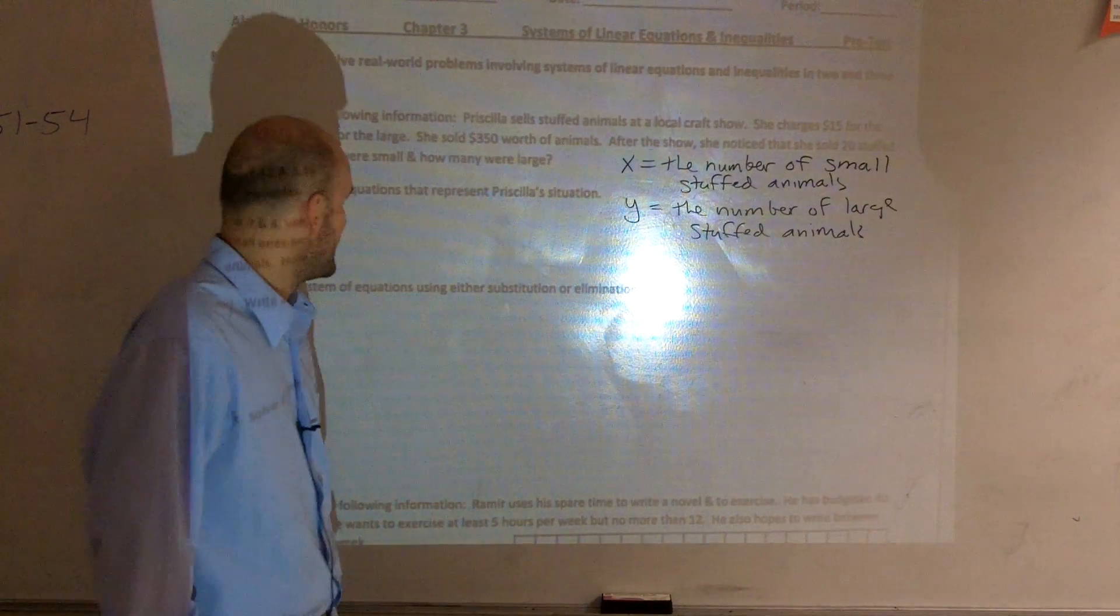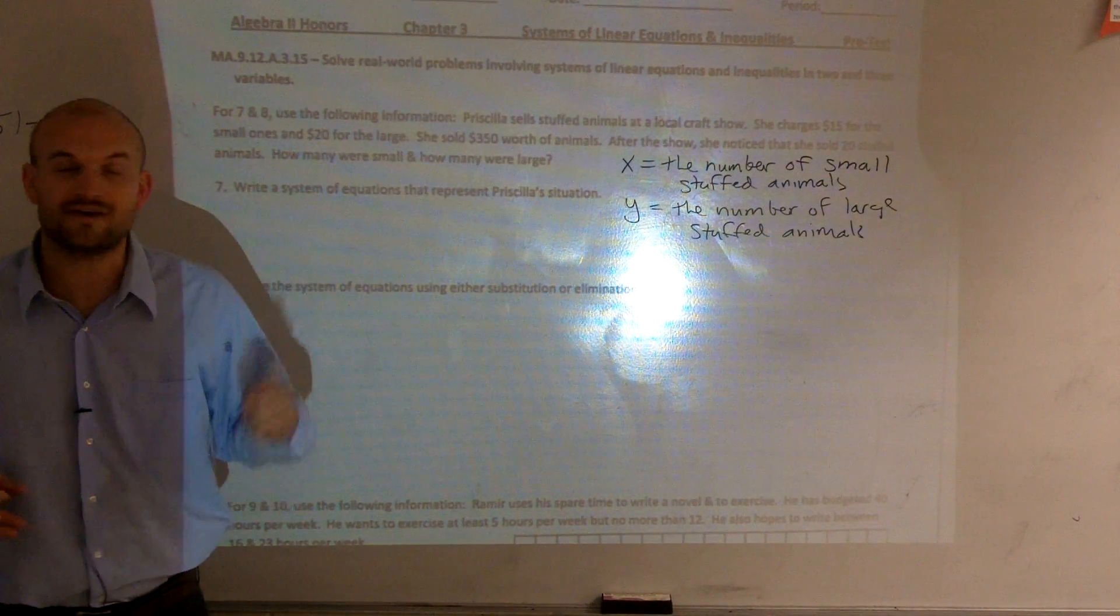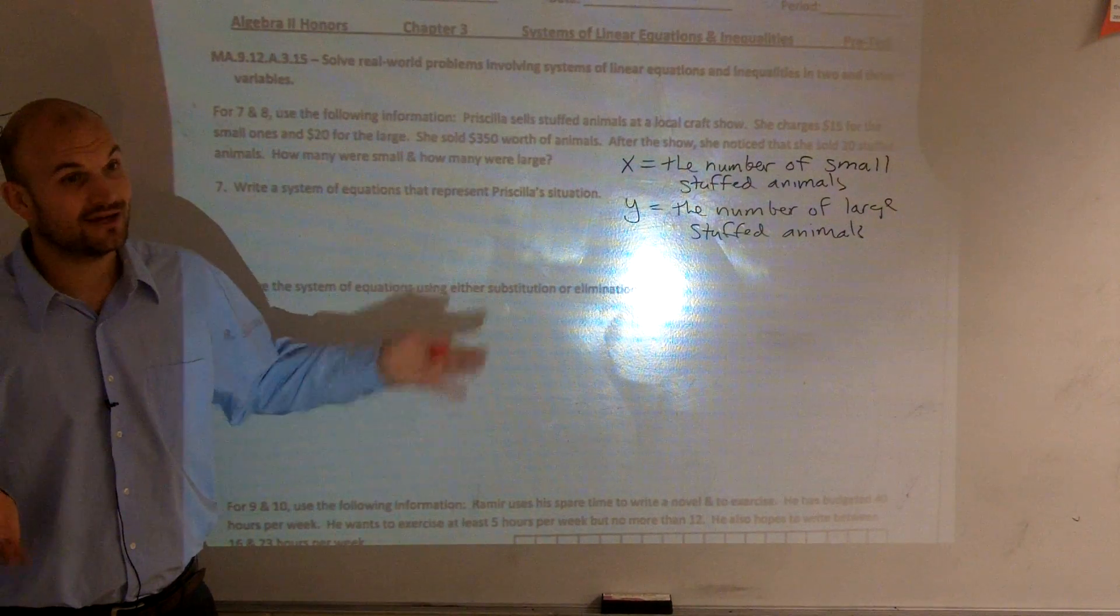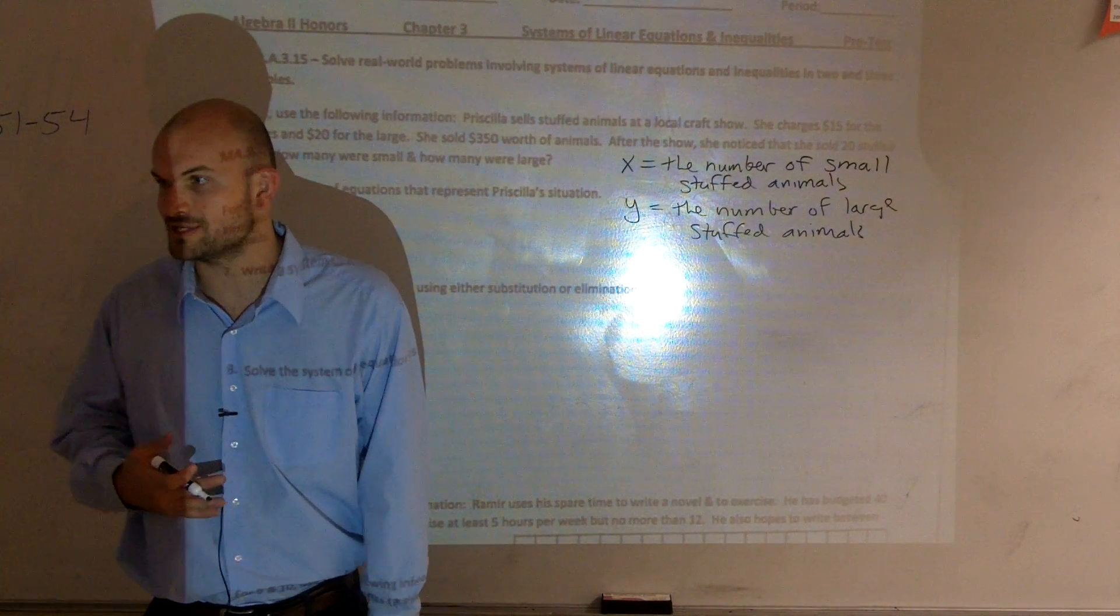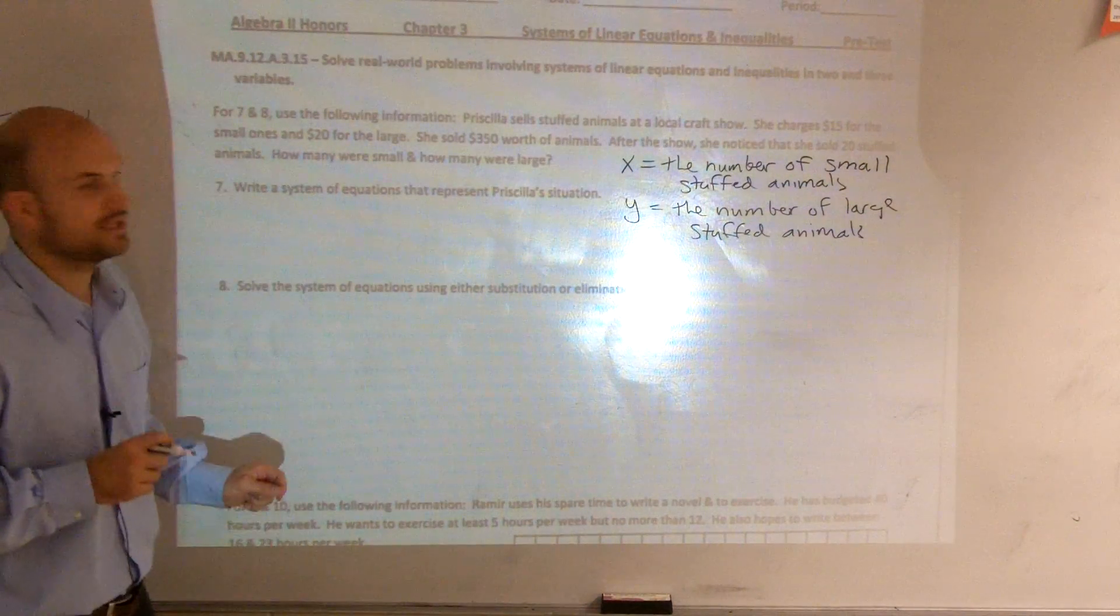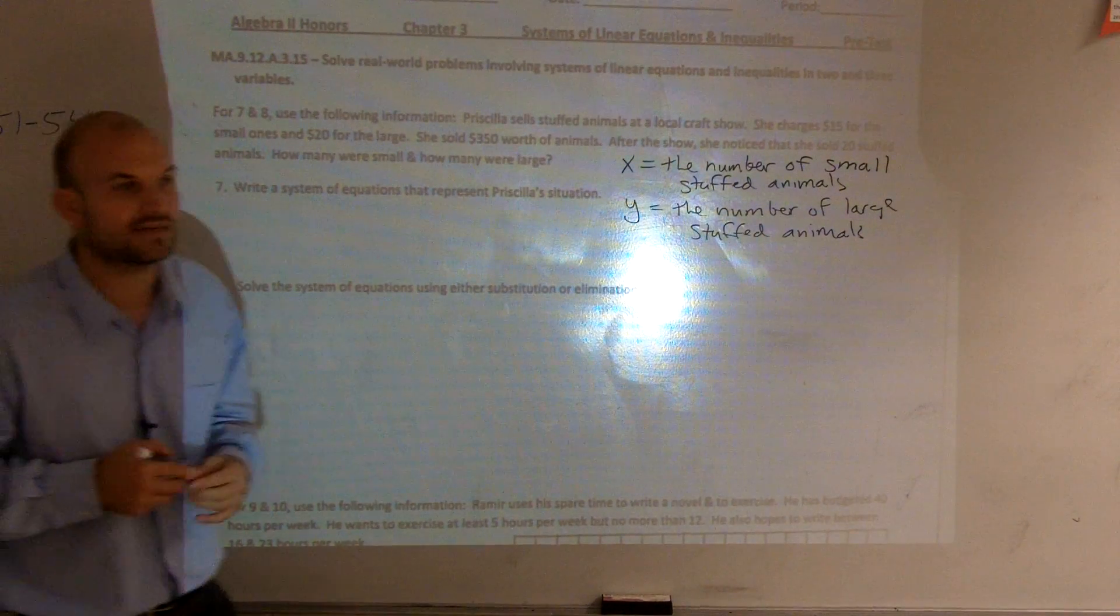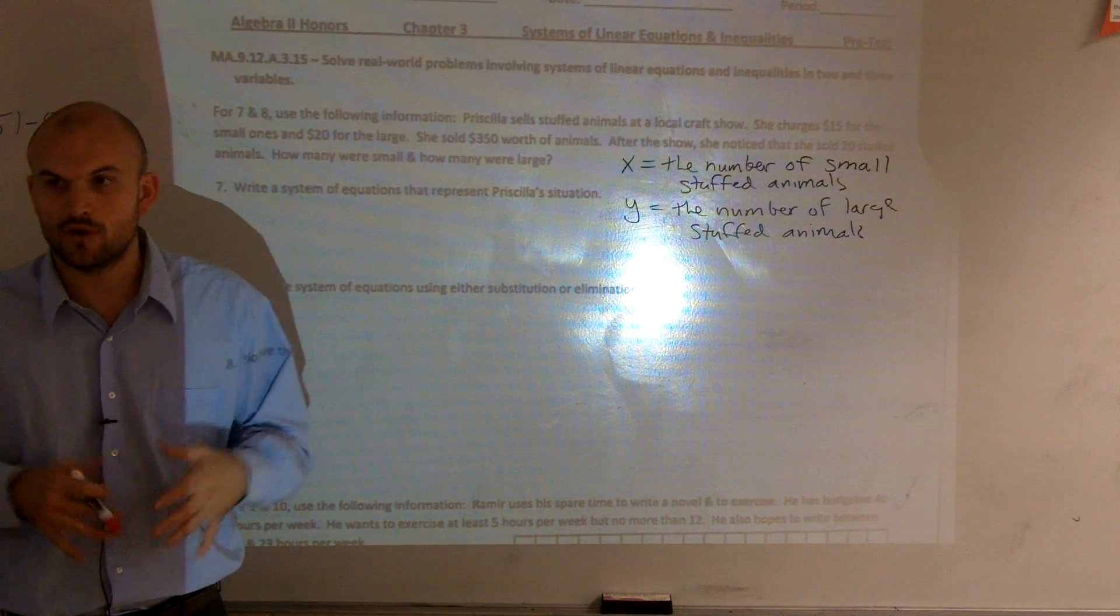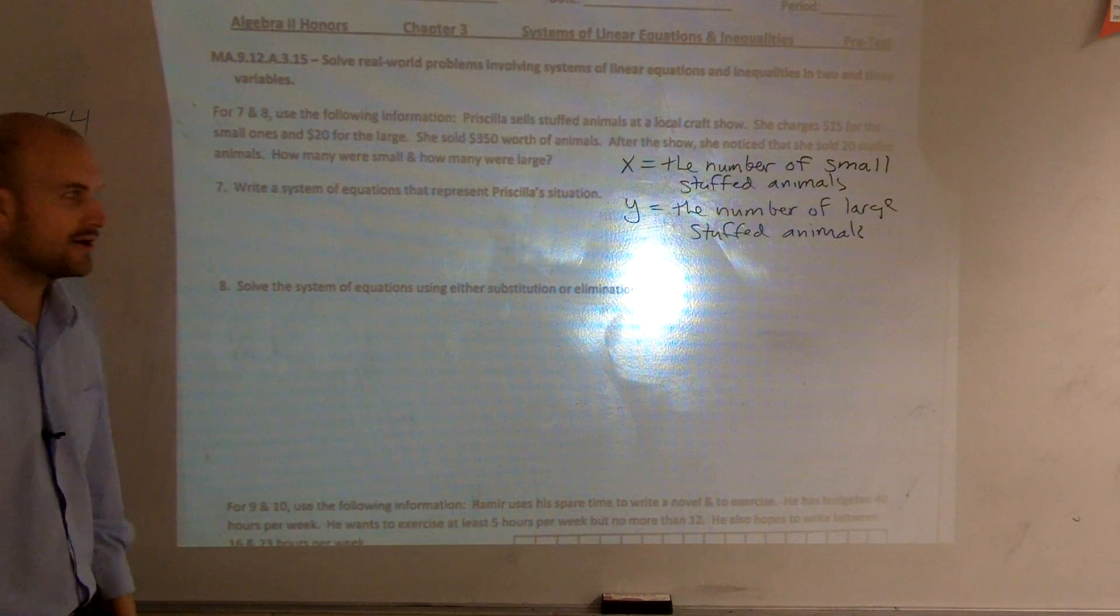Now, the next thing we need to look at is it says, write a system of equations that represents a situation. First of all, if I have two variables, how many equations do I need? Two, right? For every variable that you're going to solve for, you have to have an equation. So, since I have two variables, I need to create two equations. The definition of a system was when we are solving for two or more equations. But before we even get to that, let's just see if we can figure out one.